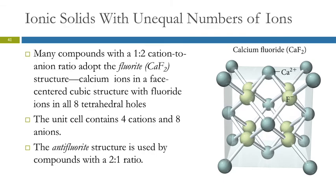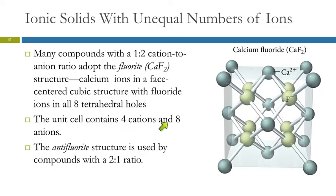Things get even more complicated when we have unequal numbers of ions. The examples so far had one cation and one anion. In calcium fluoride, there are two fluoride ions for every one calcium cation, which makes things more complicated. This is known as the fluorite structure. The calcium ions are in a face-centered cubic arrangement and the fluoride ions occupy all 8 of the tetrahedral holes. In zinc sulfide, only 4 holes were occupied because of the 1-to-1 ratio, but here we have a 1-to-2 ratio. The unit cell contains 4 cations and 8 anions.